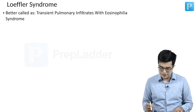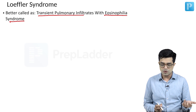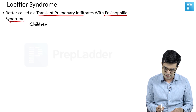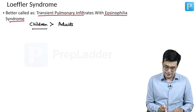Loeffler syndrome is now better known as Transient Pulmonary Infiltrates with Eosinophilia syndrome. When they say Loeffler syndrome or Transient Pulmonary Infiltrate with Eosinophilia syndrome, they are talking about the same variety. Loeffler syndrome is more commonly seen in children as compared to adults, although it can be seen in adults as well.